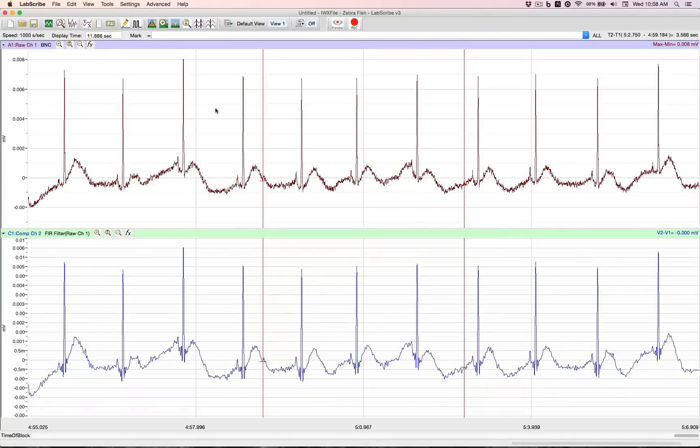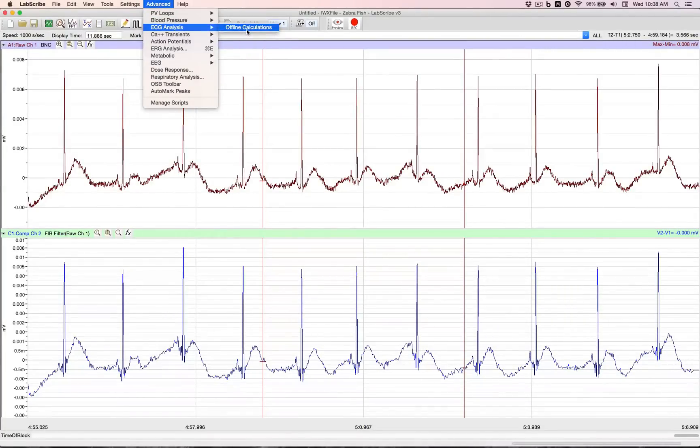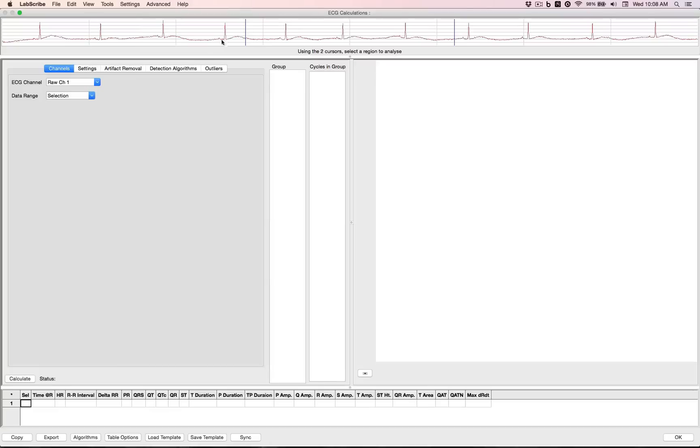While the fish is recovering, let's go analyze our data. Go to Advanced, ECG Analysis, Offline Calculations. In the window, we set the channel we want the data to come from. We're going to set the whole block of information.